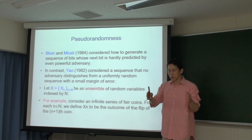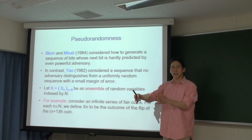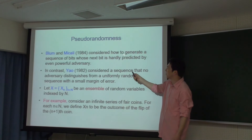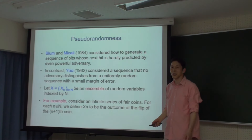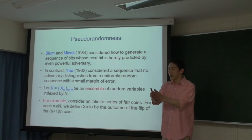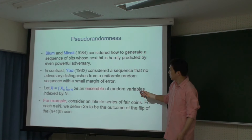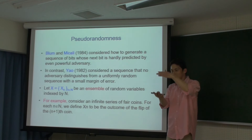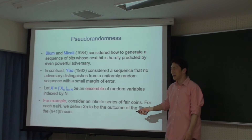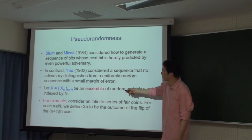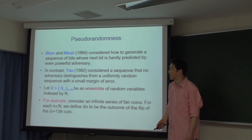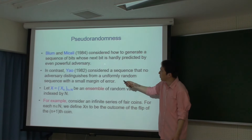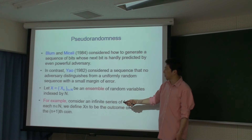今度は数度ランダムネスの話に行きます。BlumとMicaliが1984年に考えた概念です。どんな敵がいても、今まで読んできたビットに対して次のビットを予想することができない、つまりunpredictabilityです。一方Yaoが考えたのはindistinguishability、与えられたビット列が本当に真にランダムなものと比べたときにどちらが人工的に作られたものか分からない、その確率が非常に小さいという定義です。結局この2つの概念は同値になります。